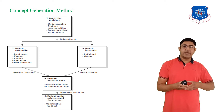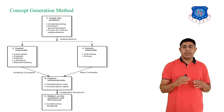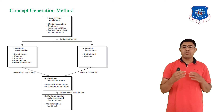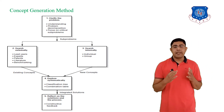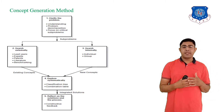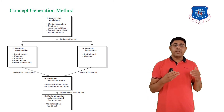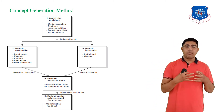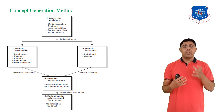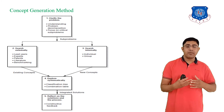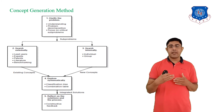Next is the concept generation method. Here I show the five-step concept generation method. The first step of this concept generation method is clarifying the problem. The objective of step one is understanding the problem, followed by problem decomposition — breaking problems into sub-problems — and then focusing on the critical sub-problems. At the end of step one, the output is the sub-problems.